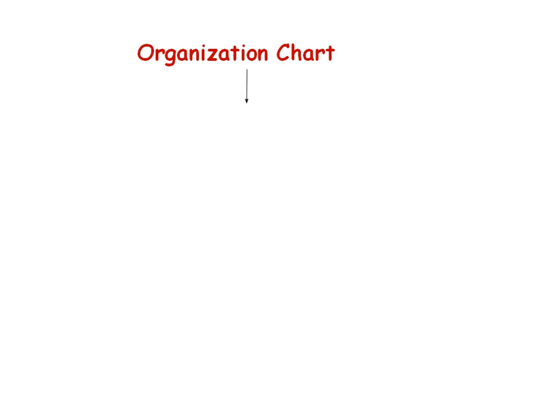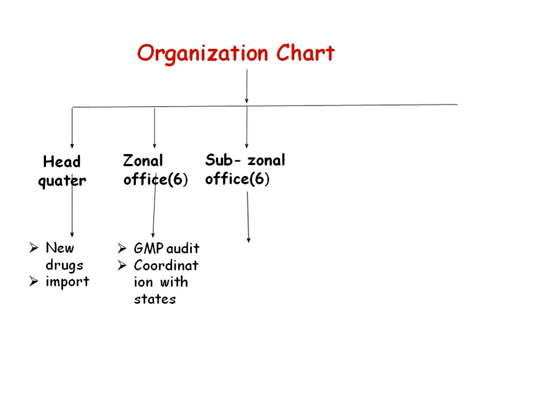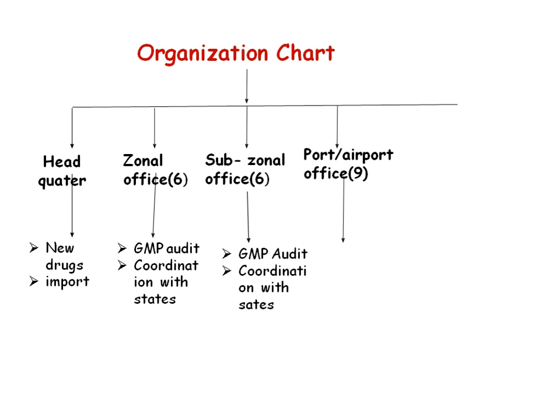In the organization chart of CDSCO, the headquarters is located in Delhi. There are zonal officers present across India. Six zonal offices are present, along with sub-zonal offices. Both zonal and sub-zonal offices are responsible for GMP audits of manufacturing plants, inspection of plants, and coordination with states. There are also nine airport and port offices responsible for permitting import and export of drugs into India.